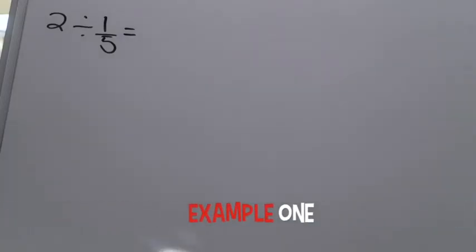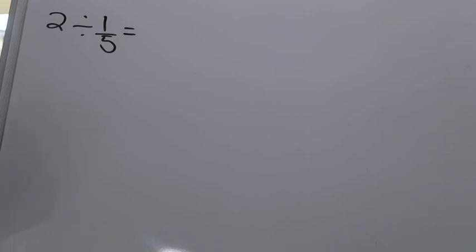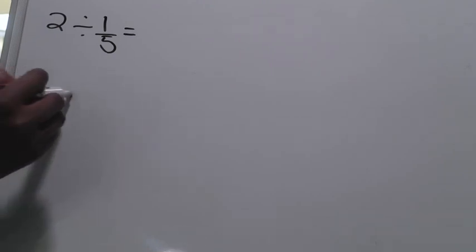In our first example we are taking the whole number two and dividing it by the fraction one-fifth. The first thing you want to do is pay attention to your whole number part and your fractional part. The whole number part tells you how big of a number line to create, so since my whole number is two, I need to create a number line that starts at zero and ends at two.